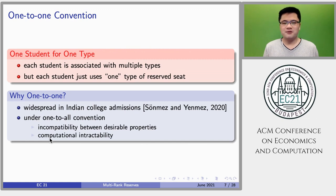Our paper is based on an assumption called one-to-one convention. It means that if one student is matched to some school, that the student only yields one type of reserved seat, rather than all types he is qualified for.